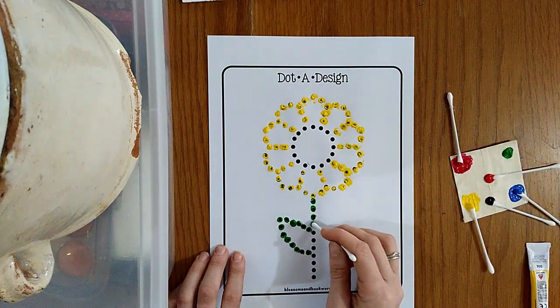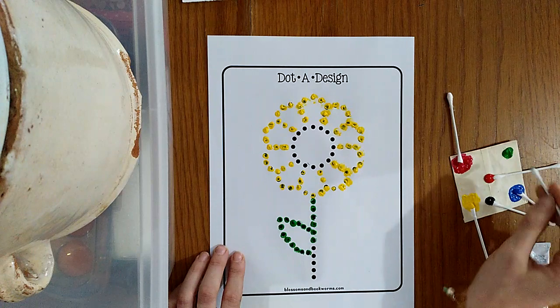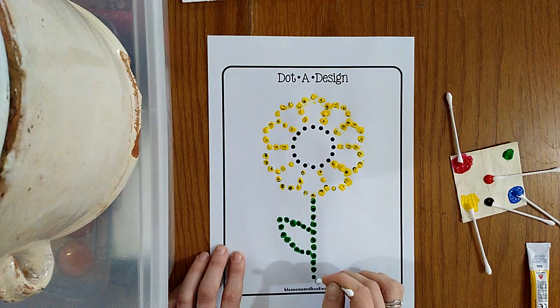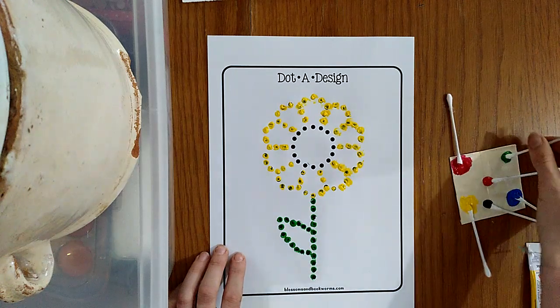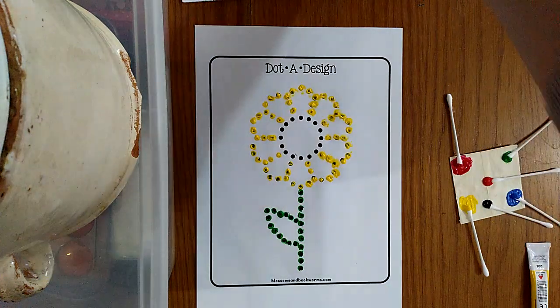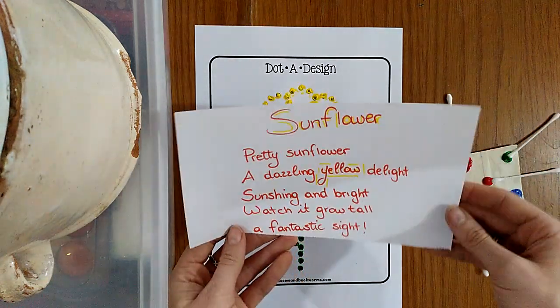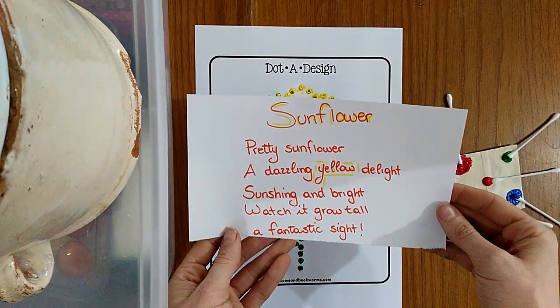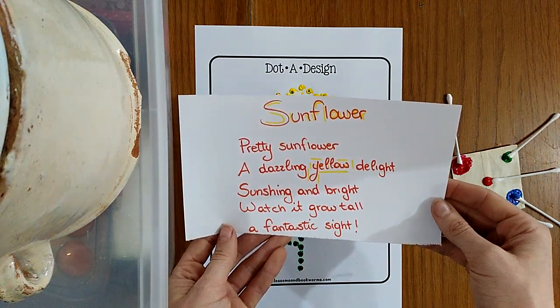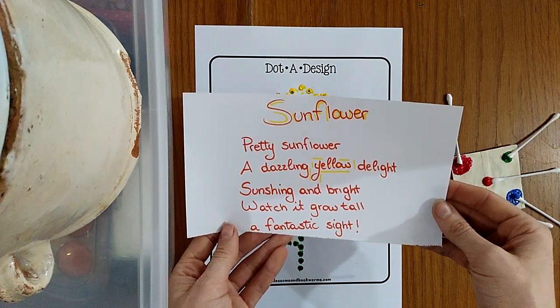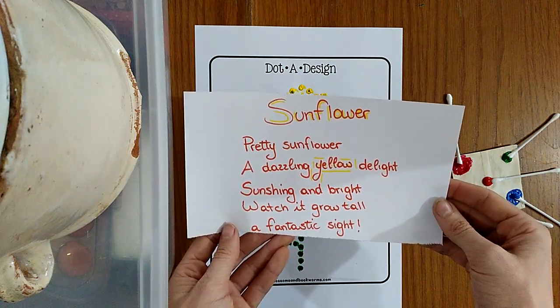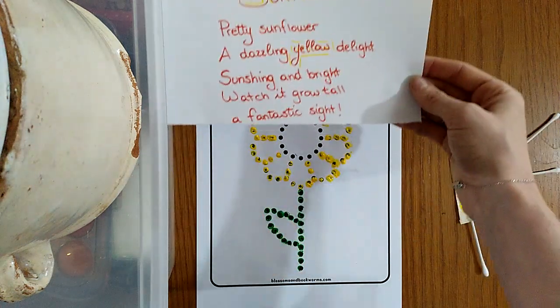Quindi mi raccomando, quando avete finito colorate il foglio come volete. Because it's springtime, è la primavera. In the springtime we have lots of flowers. So let's say our poem one last time. Sunflower. Pretty sunflower, a dazzling yellow delight. Sun shining and bright. Watch it grow tall, a fantastic sight.